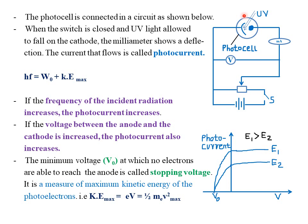The photocell is evacuated — there is a vacuum inside — to prevent electrons from losing kinetic energy due to collisions with air molecules. The stream of electrons completes the circuit path, and current flows through the circuit. That is why the milliammeter is able to detect a small photocurrent flowing through.